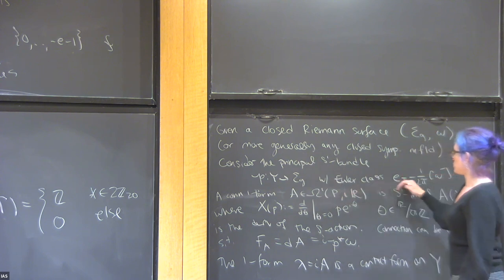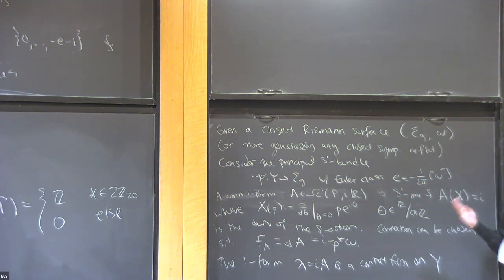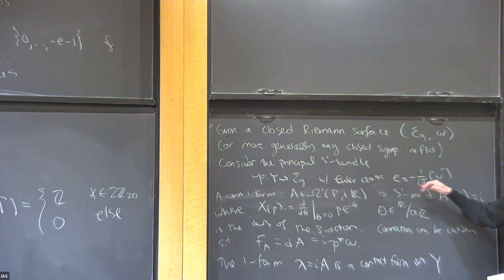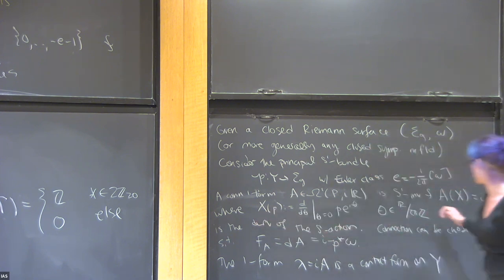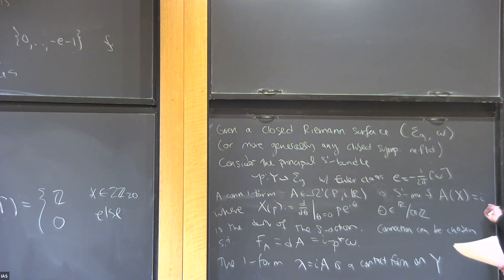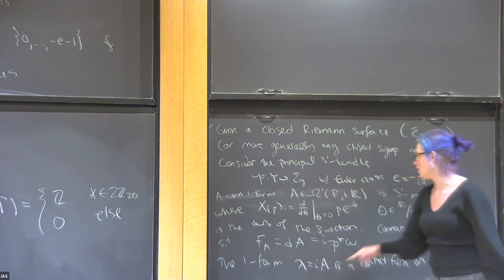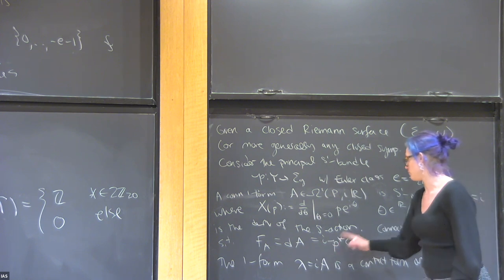You're going to look at the principal S1 bundle which has Euler class given by negative the cohomology class of the symplectic form on the base divided by 2π — that normalization ensures the Reeb orbits have period 2π. A connection 1-form for this bundle is S1-invariant. When we feed in the derivative of the S1 action — the vector field X — we get i. So if we want a contact form for the bundle, we can take i times the connection 1-form. The curvature is given by d of the connection 1-form, which is i times the pullback of omega.